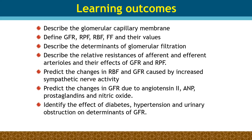Also covered: the effect of changes in the afferent and efferent arterioles on glomerular filtration and renal plasma flow, predicted changes in renal blood flow or GFR by increasing renal sympathetic activity, effect of changes in GFR due to angiotensin II, atrial natriuretic peptide, prostaglandins, nitric oxide, and pathophysiology related to GFR especially in diabetes, hypertension, or urinary obstruction.